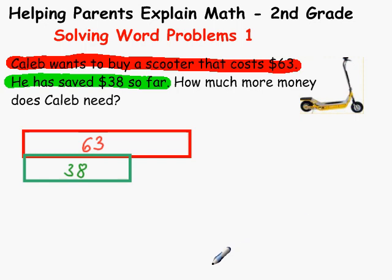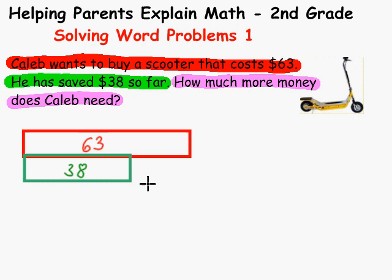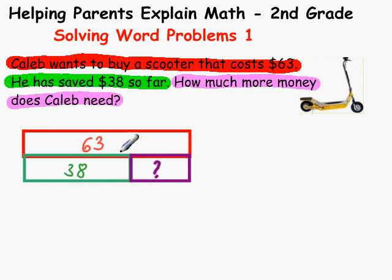And then the question is: how much money does Caleb need? So where would that block go? That's how much he needs to get to the 63. So this is the question mark. And now the block is set up and it's easy for us to see that the answer is 63 minus 38.